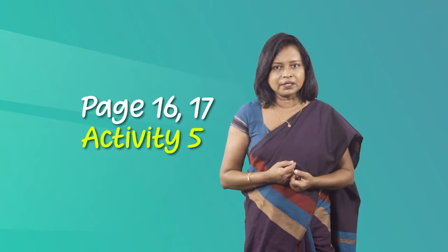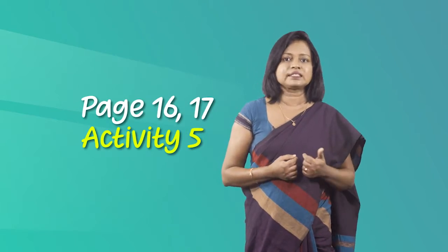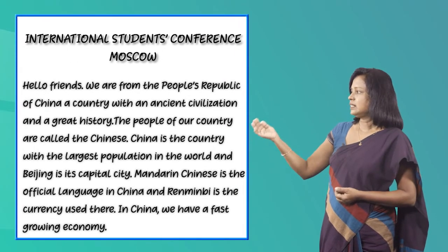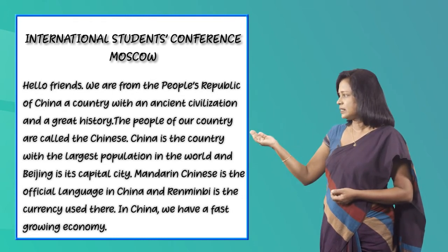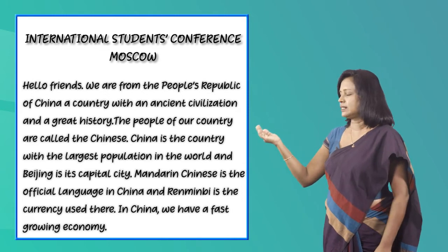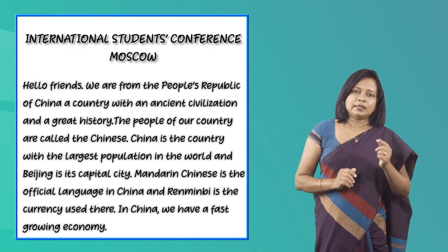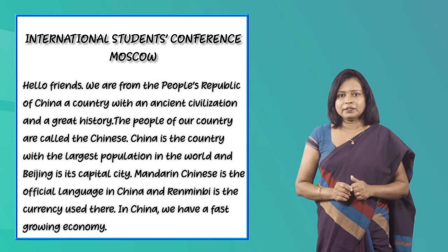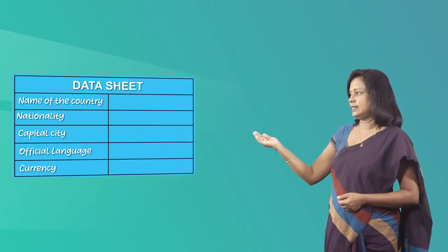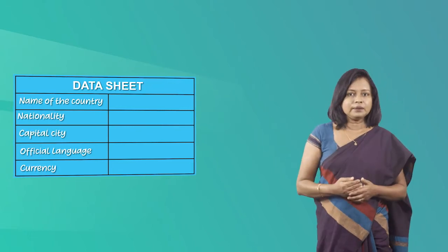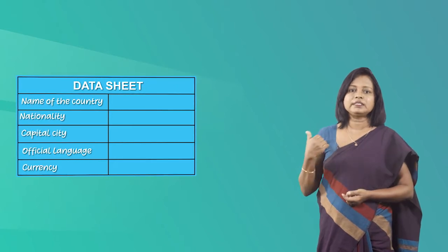You are going to do it with an activity now. This activity is based on activity 5 on page 16 and 17 of your textbook. First you have to read this description. It is a part of a presentation script — a presentation done by a student at an international conference. Let's read this description and transfer the information to this data sheet. Now pay attention to what information is required to fill in this data sheet.